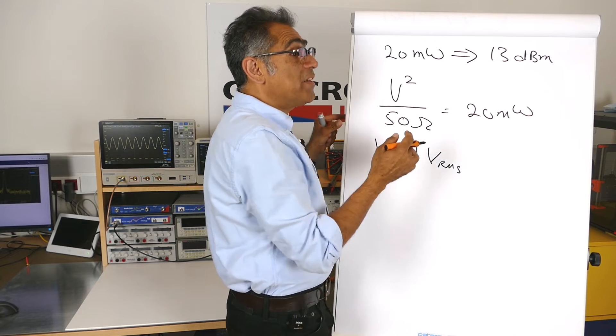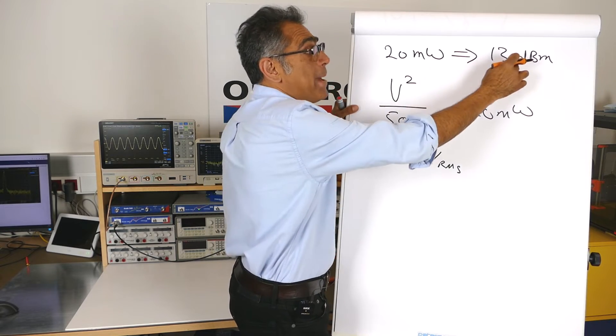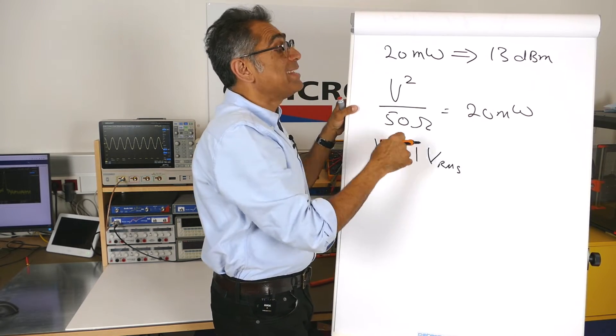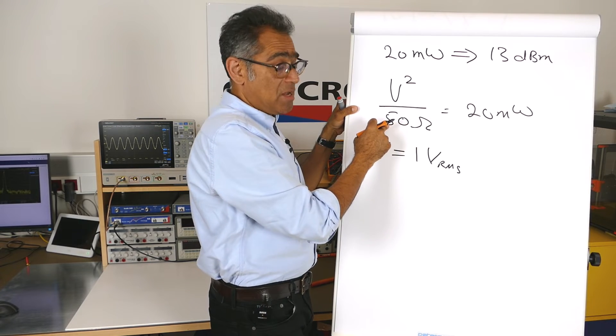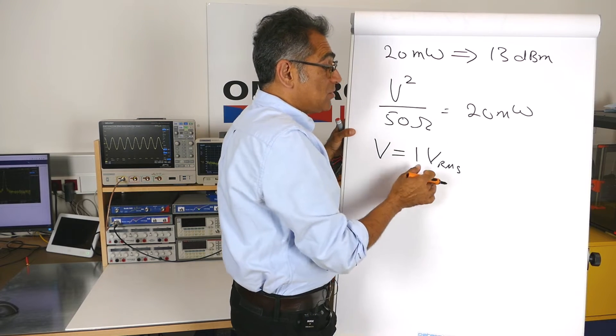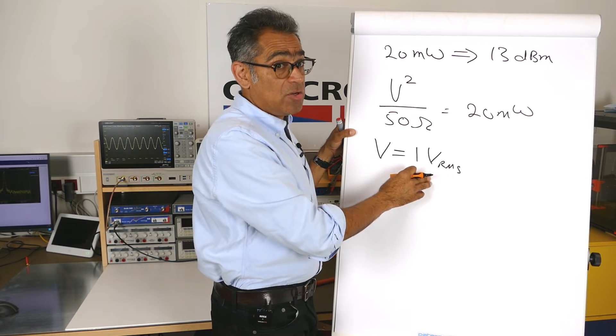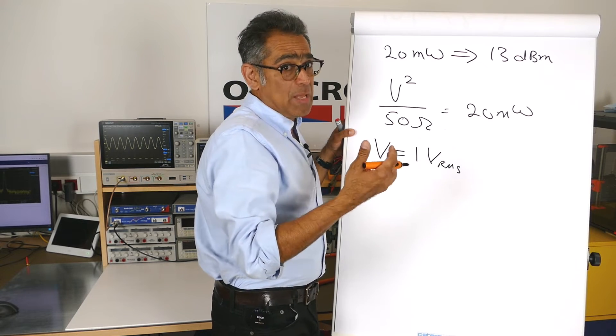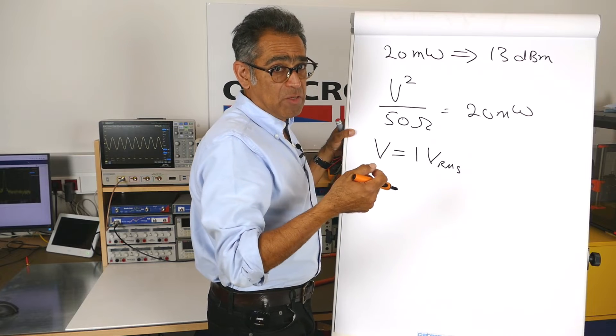So we have converted our dBm into a volt, given that our load is a standard at 50 ohms. Now if I want to convert that into dBs, I could, but the standards in EMC usually work in dB microvolts.